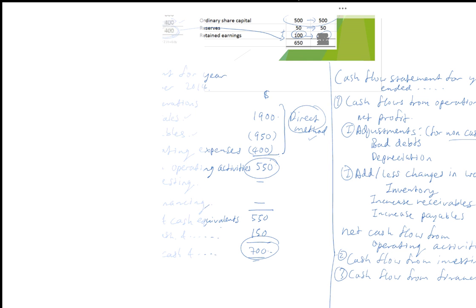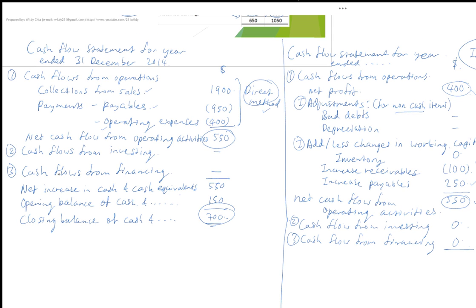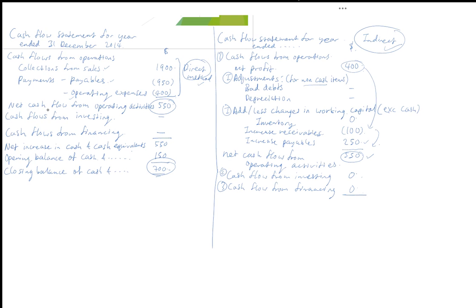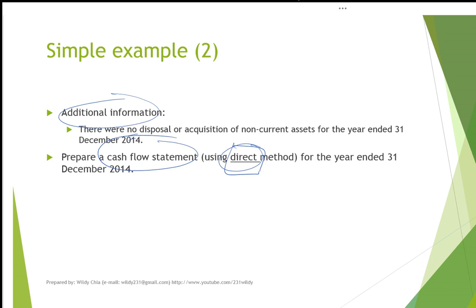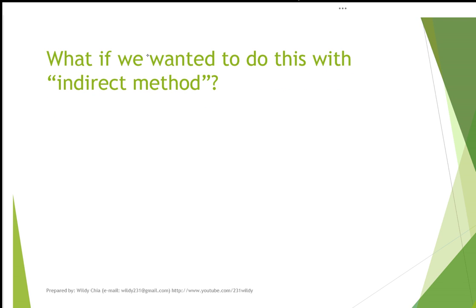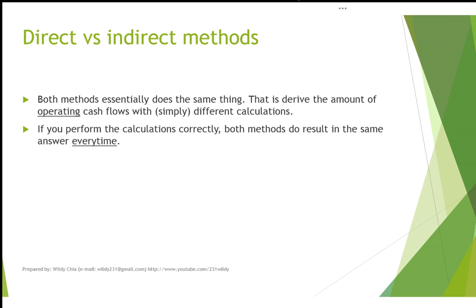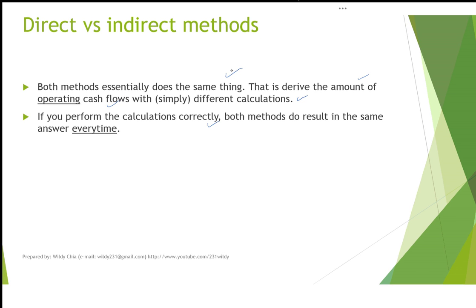The two methods basically do the same thing — derive operating cash flows using different approaches. If the calculations are performed correctly, the results from both methods have to be exactly the same every time.